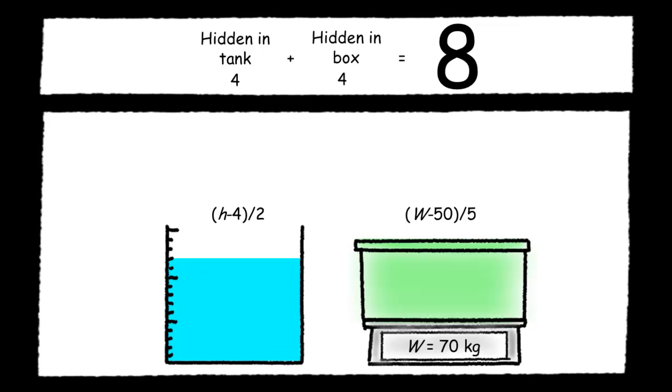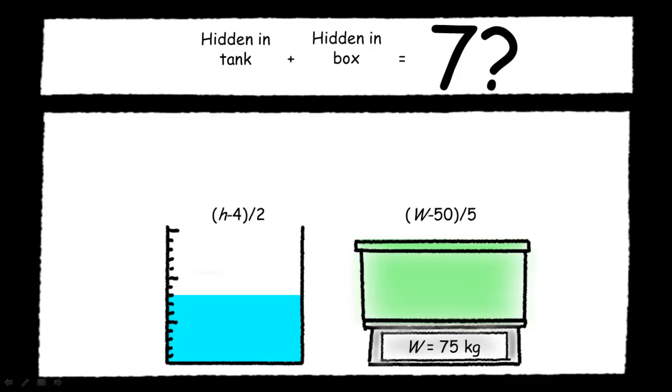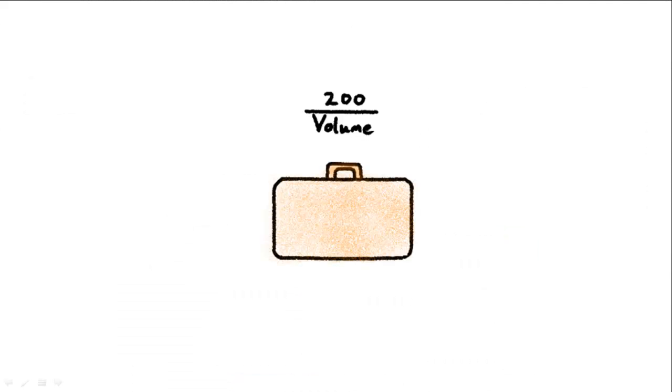Going back to our analogy, it's like we have the formula for every hidden gold bar and the summation always gives us the number 8. Then come one day, we don't get 8. Upon further investigations, we realize the gold bars are hidden in other boxes and other tanks that we didn't even know exist in the room.